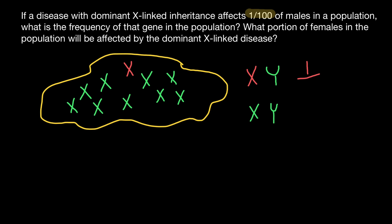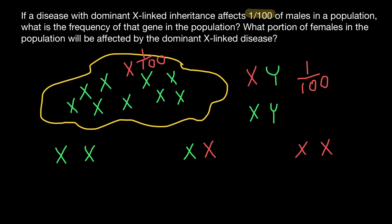So if the frequency of males who have this genetic disorder is one out of one hundred, then the frequency of this defective allele in the gene pool is also one out of one hundred. Now let's think about the genotypes a female may have. A female may have two normal X chromosomes, or she can be heterozygous with one normal and one defective chromosome, or she may have two defective X chromosomes. If the defective allele frequency is 1/100, then the normal allele frequency is 99/100.